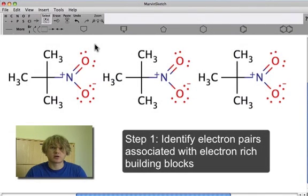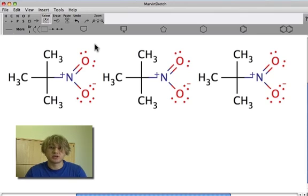The first step in drawing curved arrows for resonance structures is to identify where the source of electrons is going to be. The source of electron flow is normally in an electron-rich area in the molecule, typically somewhere like a charge or a lone pair.